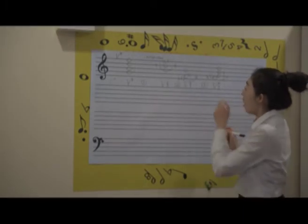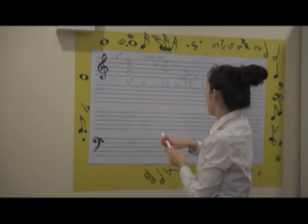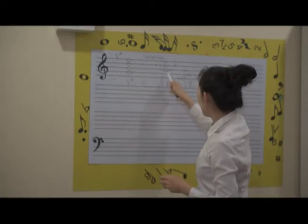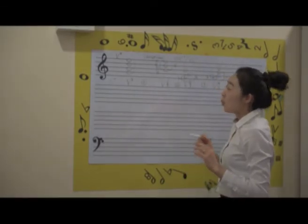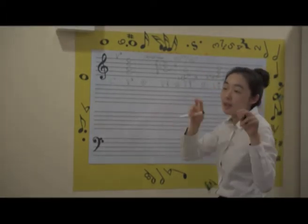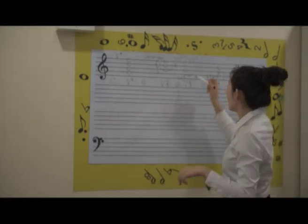All notes should be present. For example, if you only have B, D, F in C major, that is VII — the leading tone triad, which is the least stable degree, and we seldom use it, except in special cases. So you pretty much will not use it, and that's why you need all notes present.